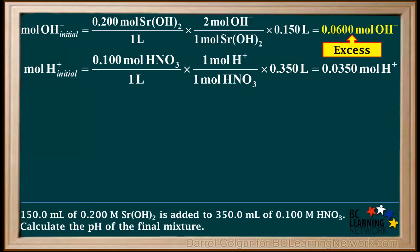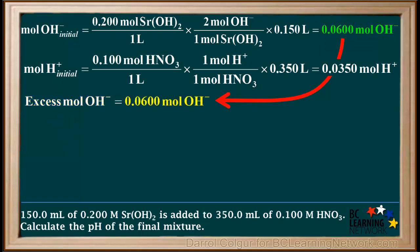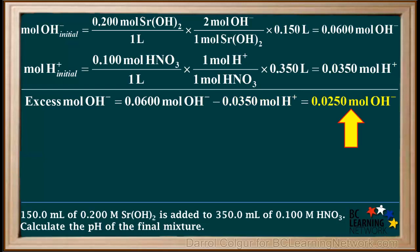Comparing the initial moles of OH⁻ with the initial moles of H⁺, we see that we have more moles of OH⁻ than of H⁺. So the OH⁻ is in excess in this case. The excess moles of OH⁻ is 0.0600 moles of OH⁻ minus 0.0350 moles of H⁺, which equals 0.0250 moles of OH⁻.